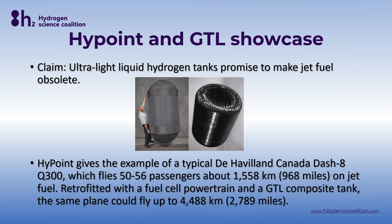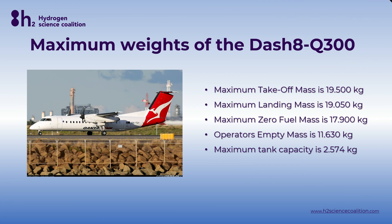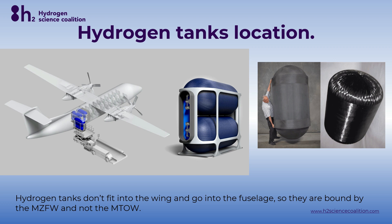This is the claim made by Highpoint with installation of the GTL ultralight liquid hydrogen tank: the range of a Dash 8 Q300 with 50 to 56 passengers is to increase from 1,558 kilometers to 4,488 kilometers — that's almost three times the range. Is this claim true? Here are the maximum weights of this aircraft. Hydrogen tanks do not fit into the wings of the aircraft because they are simply too big. That means they have to be placed into the fuselage, and as a consequence they are bound by the maximum zero fuel mass of the aircraft, not the maximum takeoff mass.